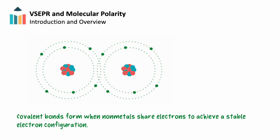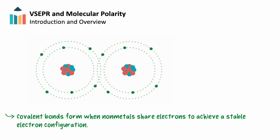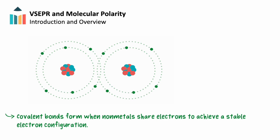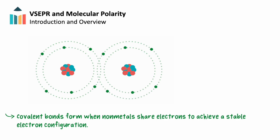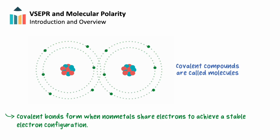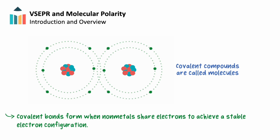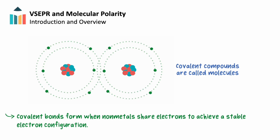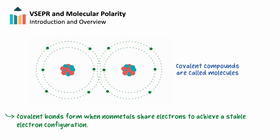Covalent bonds form when nonmetals share electrons to achieve a stable electron configuration. We call these compounds molecules. The chemical behavior of these molecules is determined by their shape and polarity.